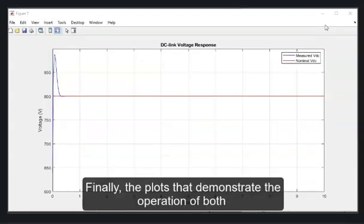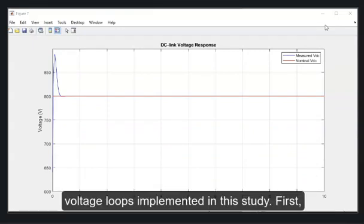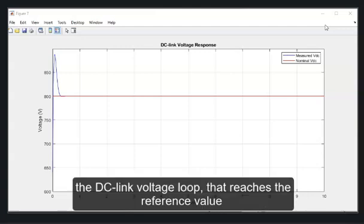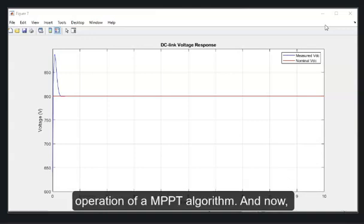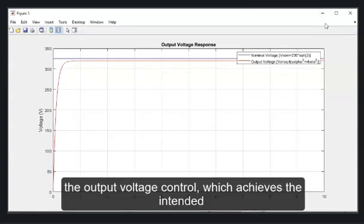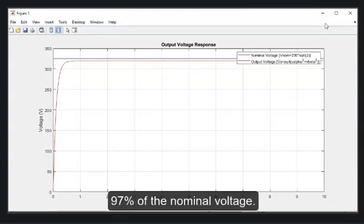Finally, the plots that demonstrate the operation of both voltage loops implemented in this study. First, the DC-link voltage loop that reads the reference value defined in the simulation, modeling the response from the operation of an MPPT algorithm. And now, the output voltage control, which achieves the intended 97% of the nominal voltage.